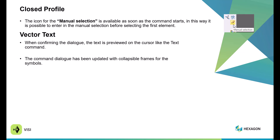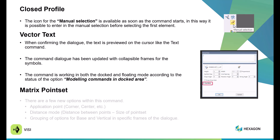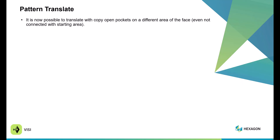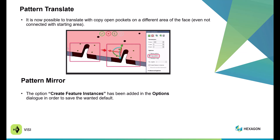The command dialog has been updated with collapsible frames and is either docked or floating depending on your modeling commands and docked area. Within Matrix Point Sets, there are a few new options added such as application points, distance mode, and grouping options for base and vertical and specific frames. Within Pattern Translate, it is now possible to do a translation of an open pocket within your dialog. Within Pattern Mirror, you have the Create Feature Instances within the Options dialog as well.